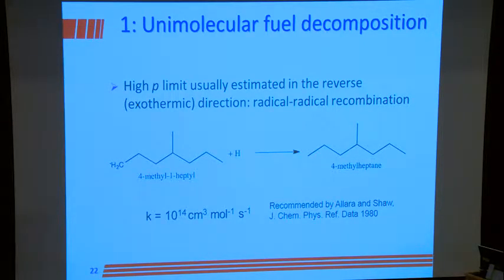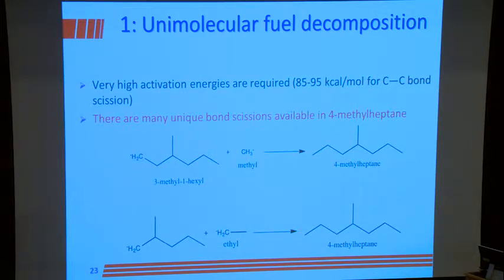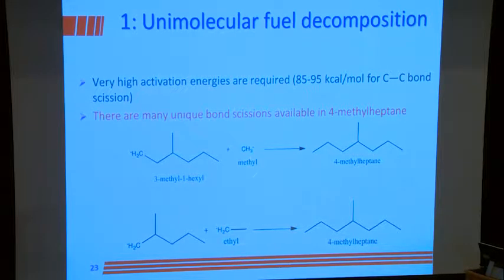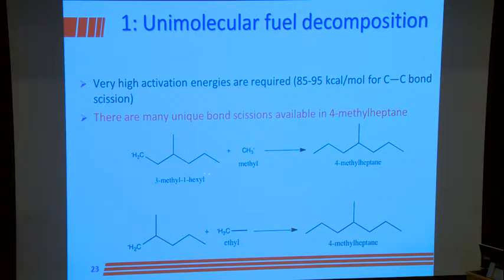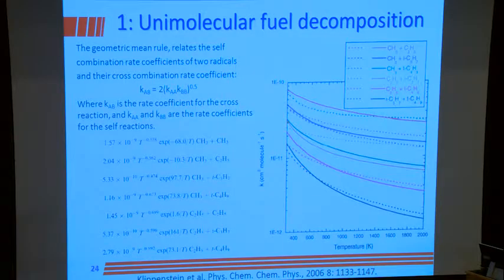The radical plus H giving back the fuel is written as 10^14 cm³/mol/s, and then the unimolecular decay rate is calculated from the thermochemistry, based on the recommendation of Allara and Shull published in JFIS-Chem Reference Data in 1980. We also include methyl plus 3-methyl-1-hexyl radical forming 4-methylheptane, with a rate constant of about 1–3 × 10^13, and the reverse direction calculated from thermochemistry.